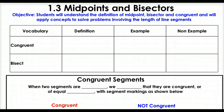What's up students? It's your third lesson, called midpoints and bisectors. Our objective for today is for you to understand the definition of midpoint, bisector, and congruent, and to apply these concepts to solve problems involving the length of line segments. Pretty cool, don't you think?